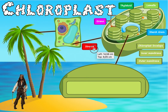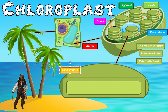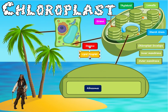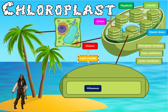Two more small structures: lipid droplets and ribosomes. Lipid droplets are the little yellow structures — they are simply small bits of fat. Just like humans have fat, plants also have some fat. For IB purposes, you just need to know that this structure exists.